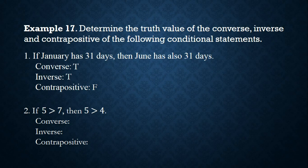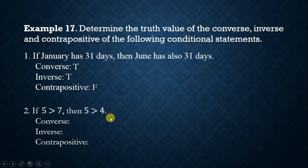Number two: if 5 is greater than 7, then 5 is greater than 4. Observe that P is false and Q is true. So the converse is false, the inverse is false, but the contrapositive is true.